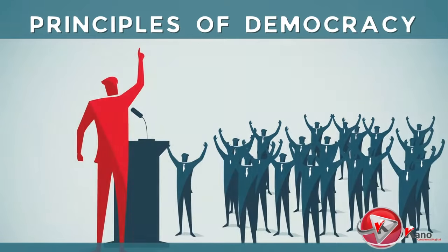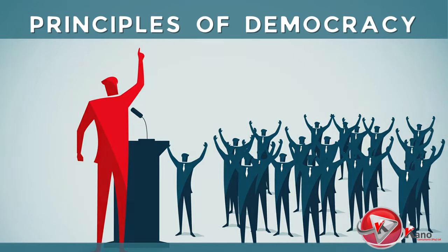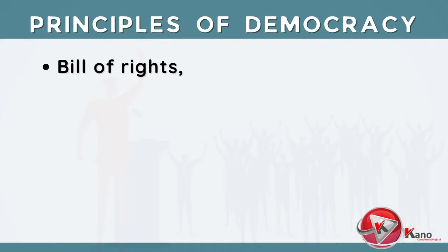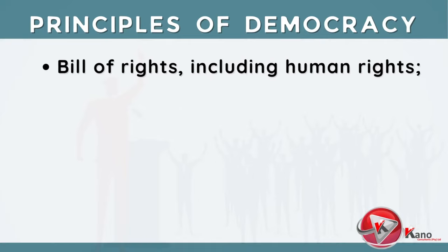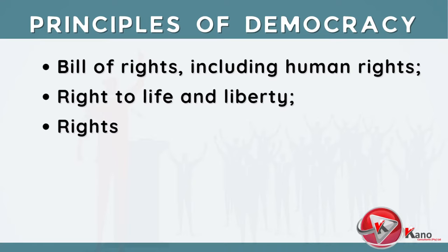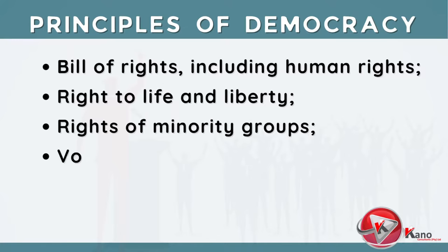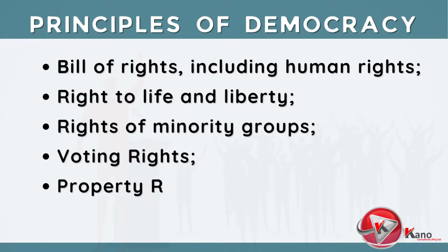Principles of democracy also include certain rights. For example, a Bill of Rights, which are constitutionally enshrined, including human rights: the right to life and liberty, rights of minority groups, voting rights, as well as property rights, to list just a few.